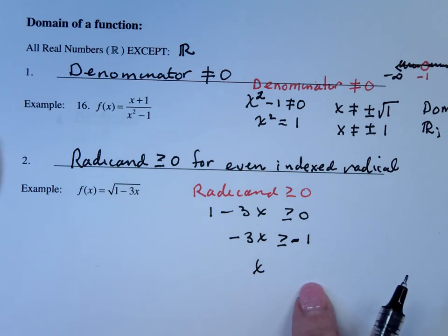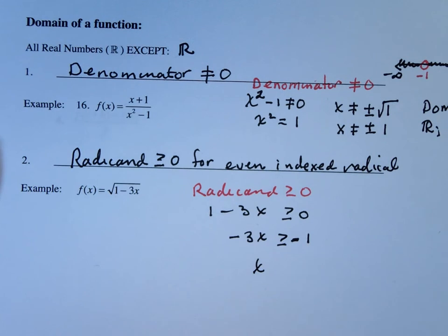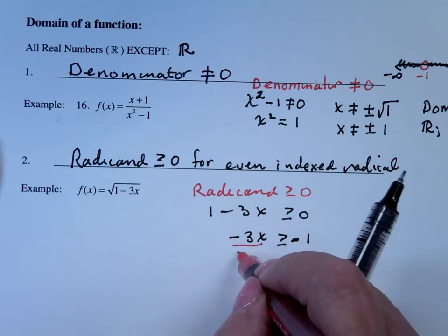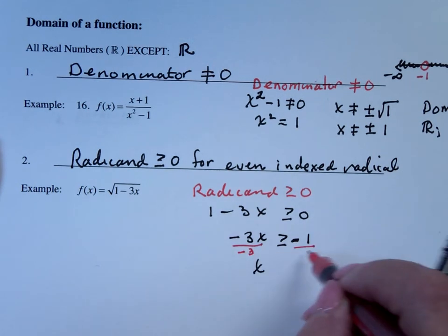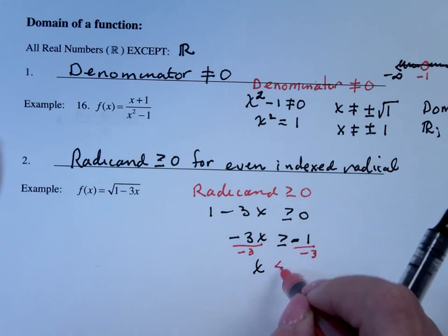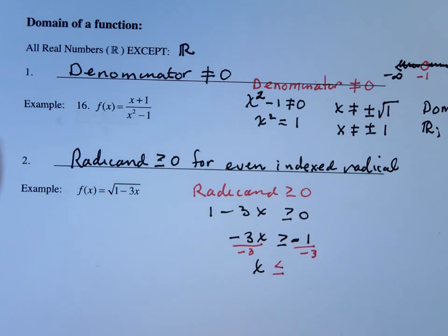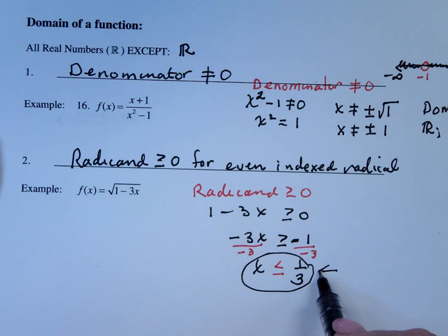What do I write here? x is less than or equal to. Well, why is it less than or equal to? Divided by a negative. I'm dividing by a negative number. So when you divide by a negative number, it reverses the direction of the inequality. So in that case, this is the domain.